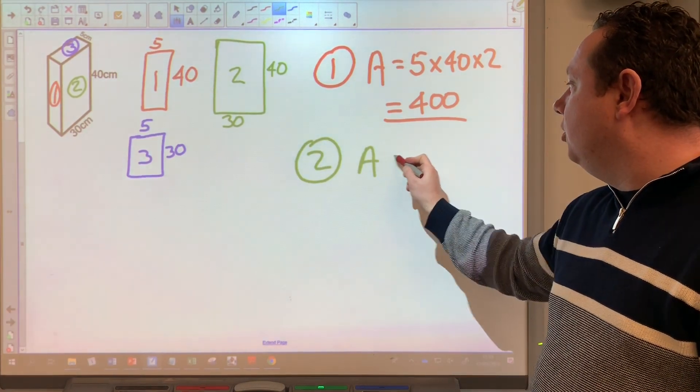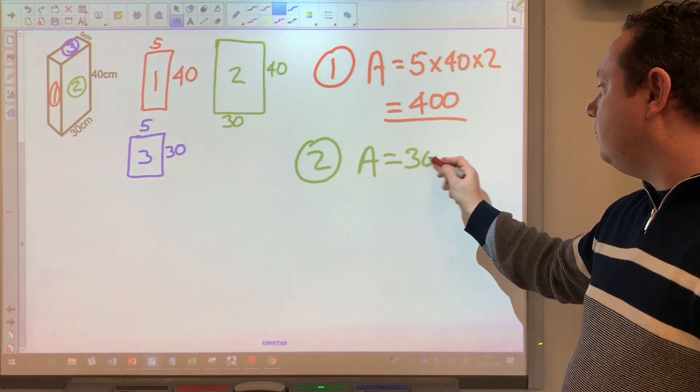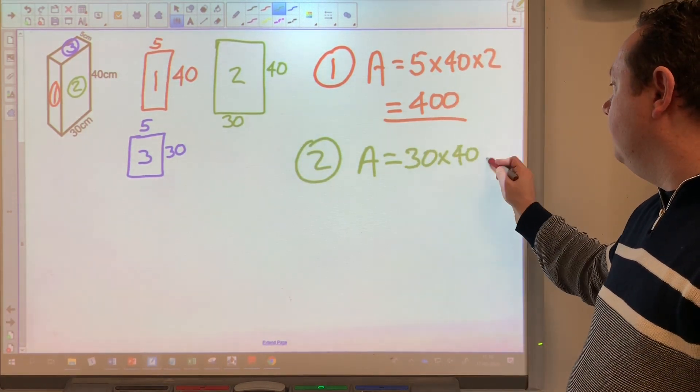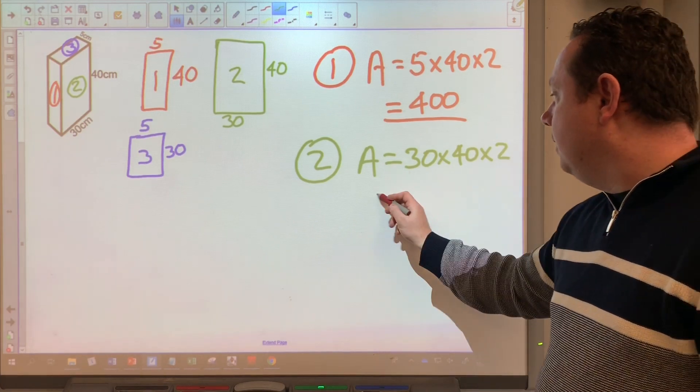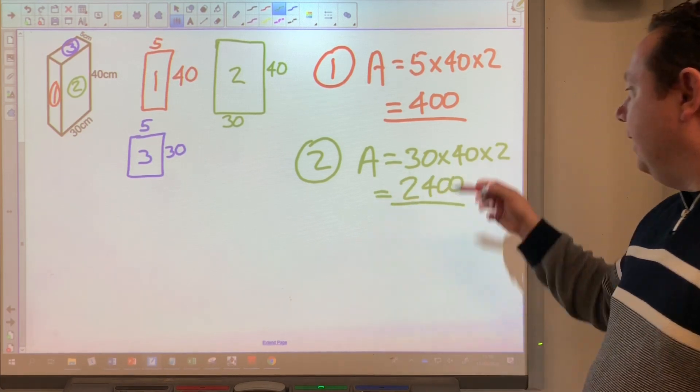Number two. The area of number two, 30 times 40. You should be able to see it easier now because you've drawn it. And you've got two of them. So times by two. That is 2,400. Take your time working that out.